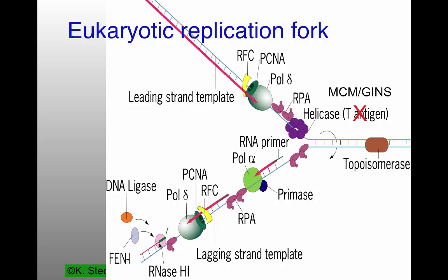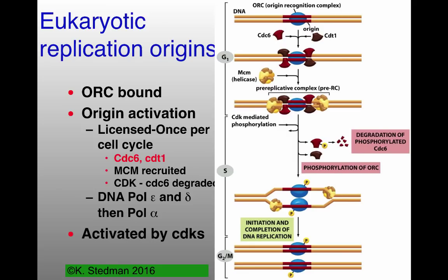There is always a topoisomerase — type 1 or type 2 — that must precede the replication fork so that not too many supercoils are formed. Topoisomerases are needed both in bacterial and eukaryotic systems. There are many eukaryotic replication origins, as opposed to the single one found in most bacteria.